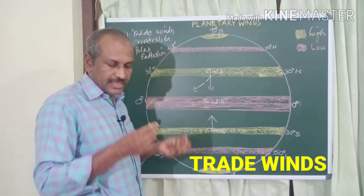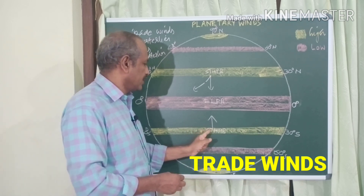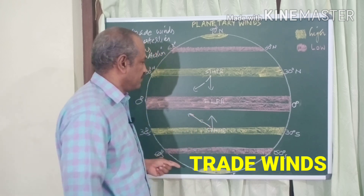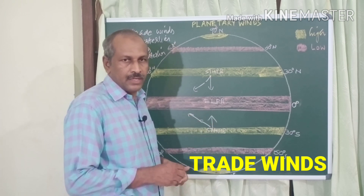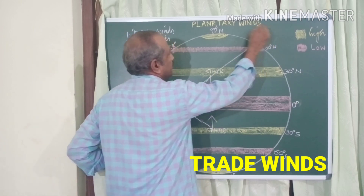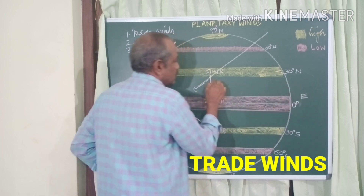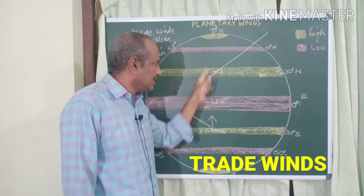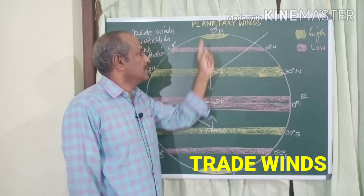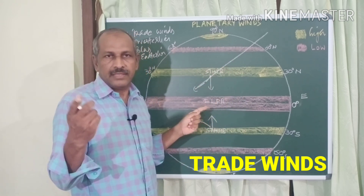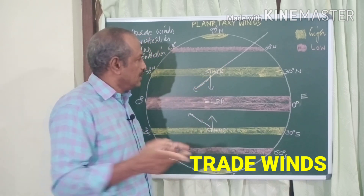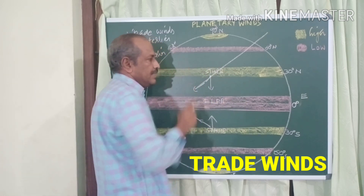In the southern hemisphere, the wind deflects to the left of its direction of movement. In the northern hemisphere, the deflection to the right means the wind blows from the northeast direction. The trade wind blowing in the northern hemisphere is therefore called the northeast trade wind. Wind names are given based on the direction of flow.